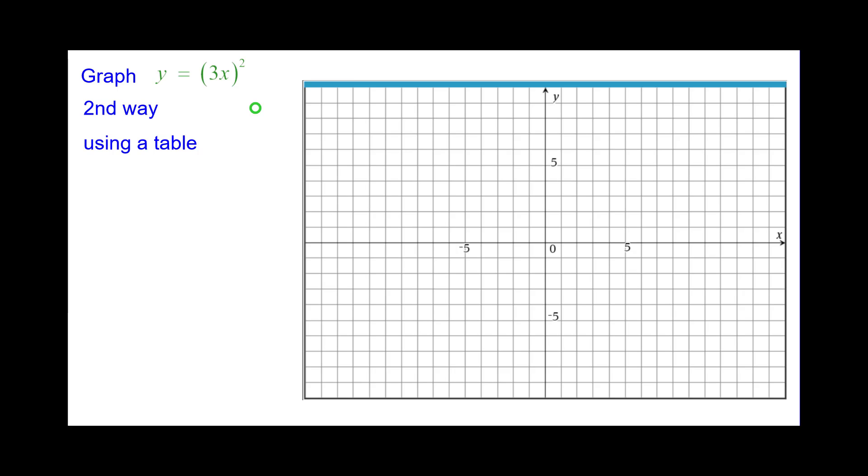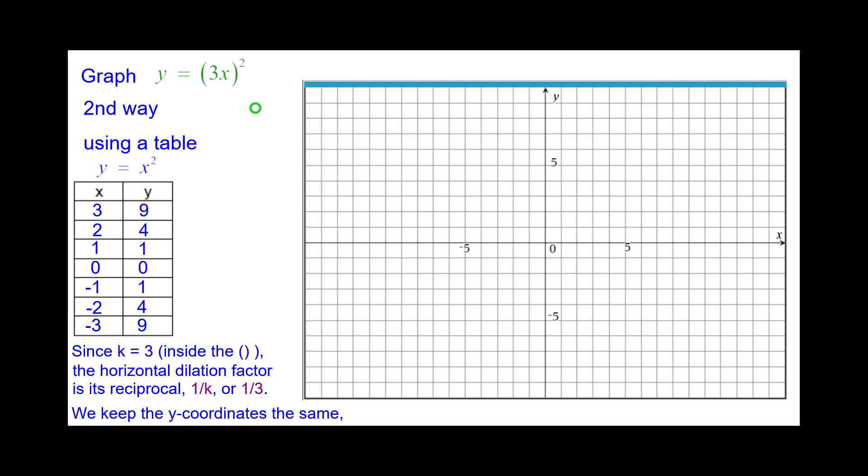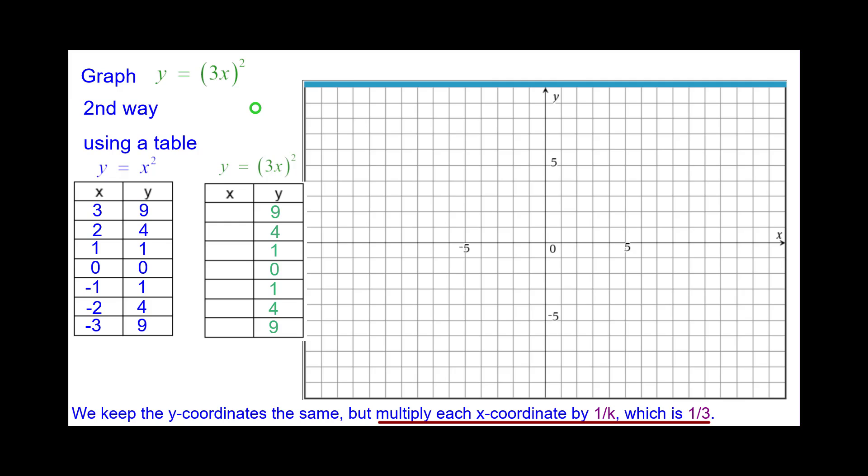Second way, using a table. Here's our normal y equals x squared table. Since k equals 3 inside the parentheses before we square it, the horizontal dilation factor is the reciprocal of 3 which is 1 third. We keep the y coordinates the same, so we'll do that in that table. But multiply each x coordinate by the reciprocal of k which is 1 third.